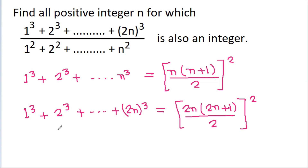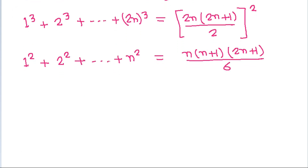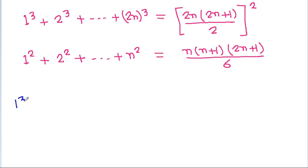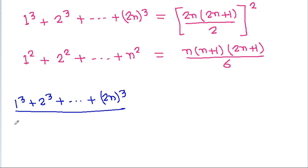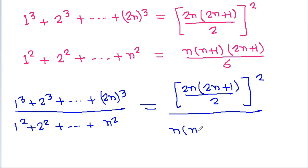We also know that 1² plus 2² plus up to n² is equal to n(n+1)(2n+1)/6. So, the ratio (1³+2³+...+(2n)³) divided by (1²+2²+...+n²) will be equal to [2n(2n+1)/2]² divided by n(n+1)(2n+1)/6.